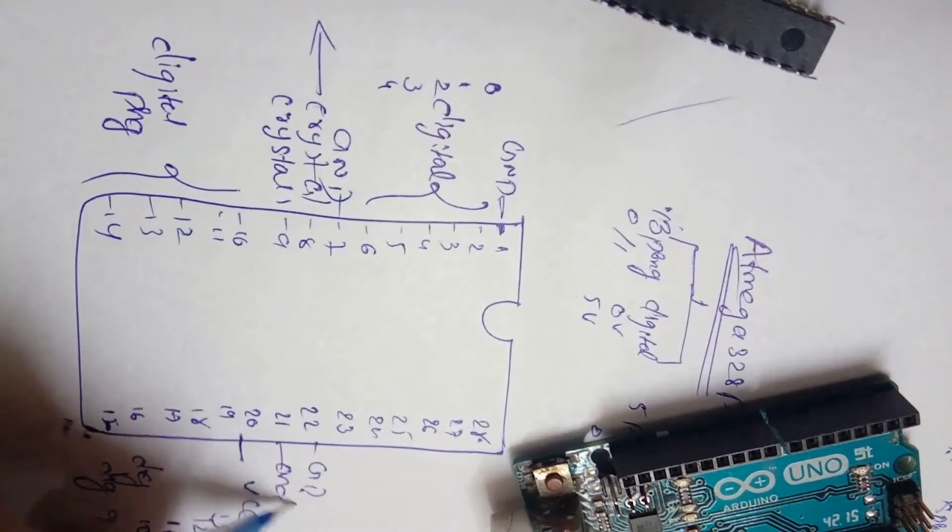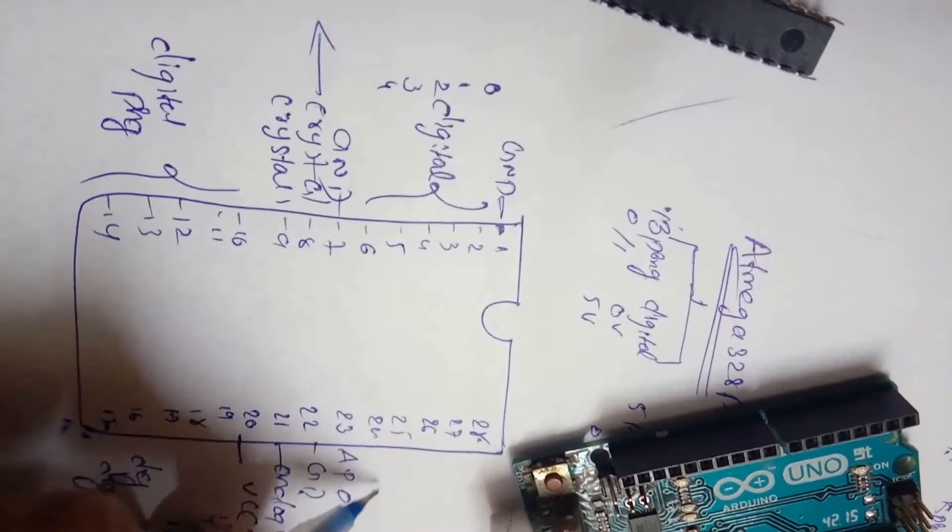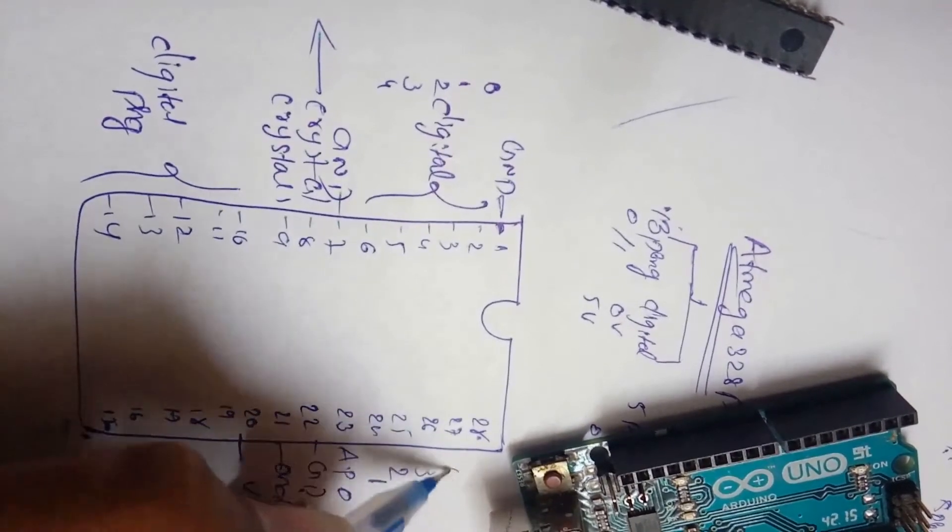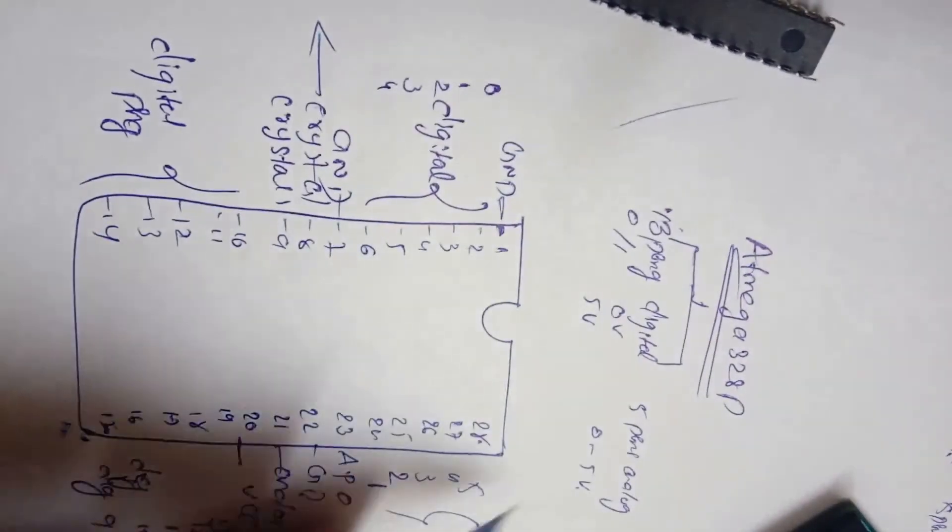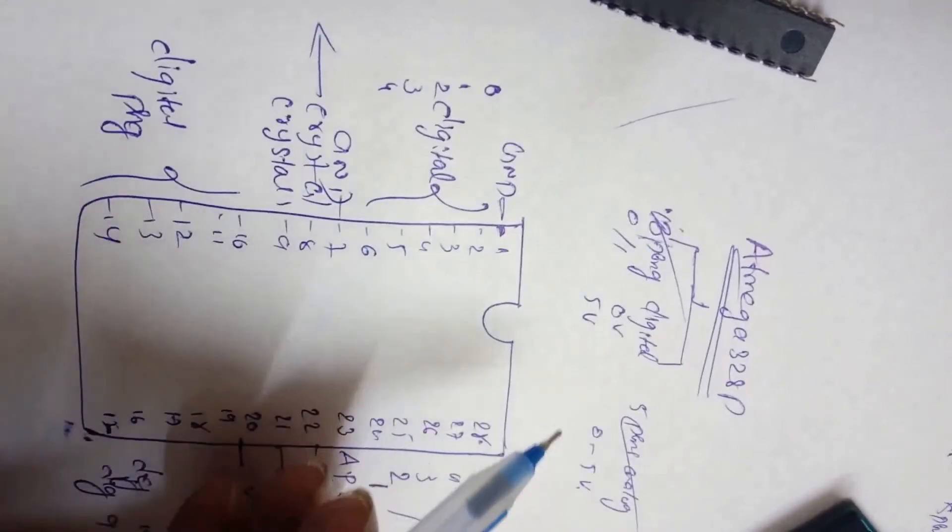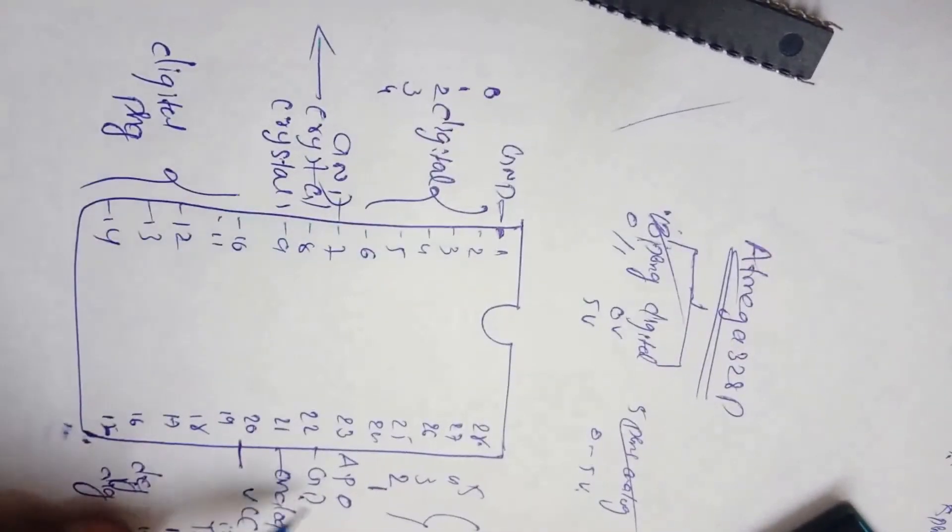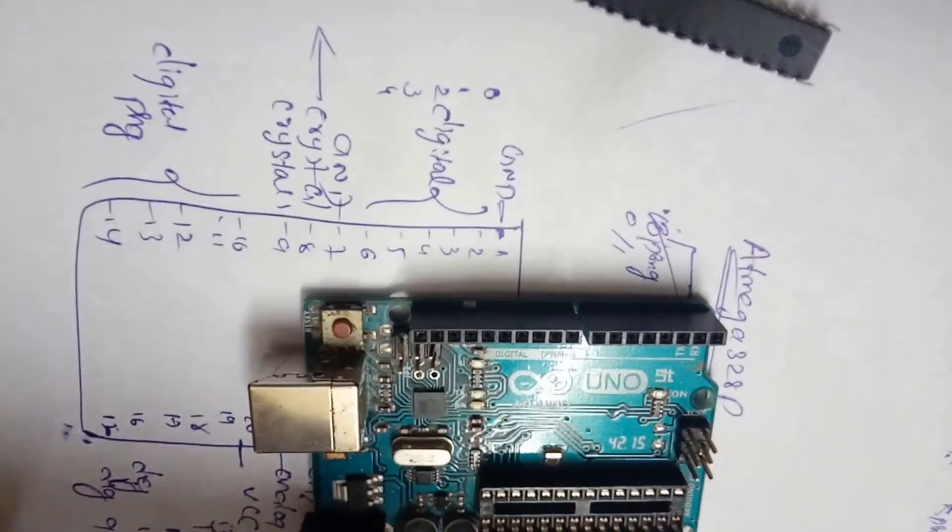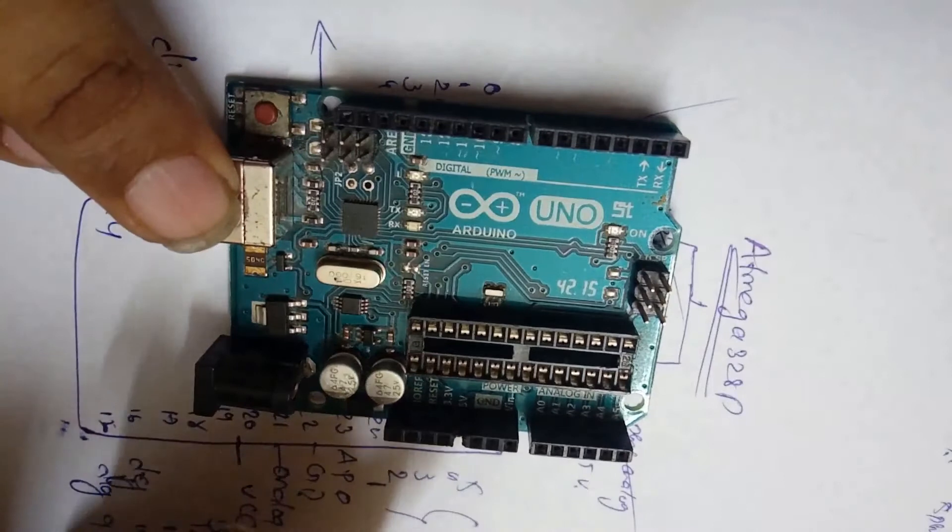Analog reference pin this. This is analog pin 0, analog pin 1, 2, 3, 4, 5. Five analog pins, 13 digital pins. 13 digital pins, 5 analog pins, and two VCC pins, four ground pins. All 28 pins are coming from this microcontroller.